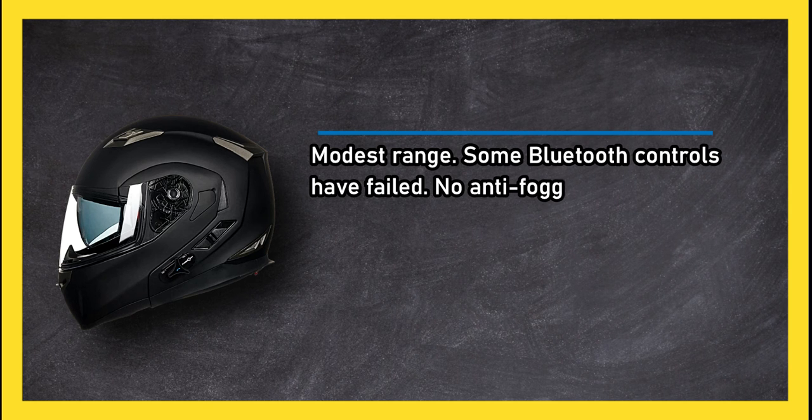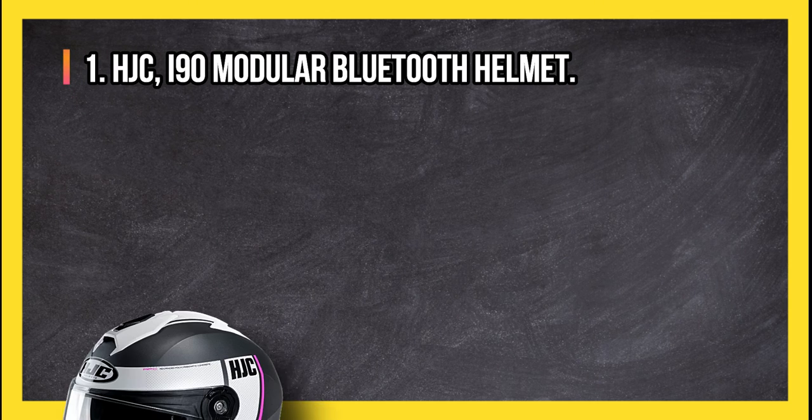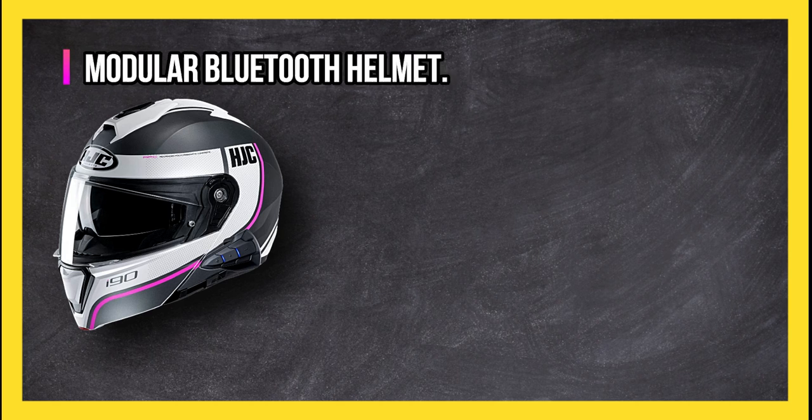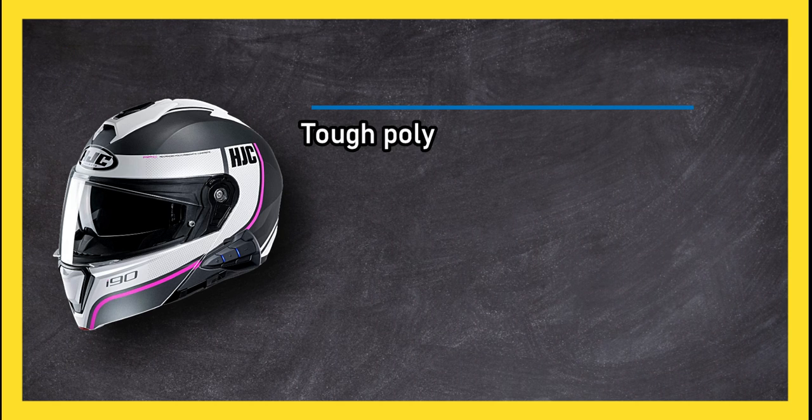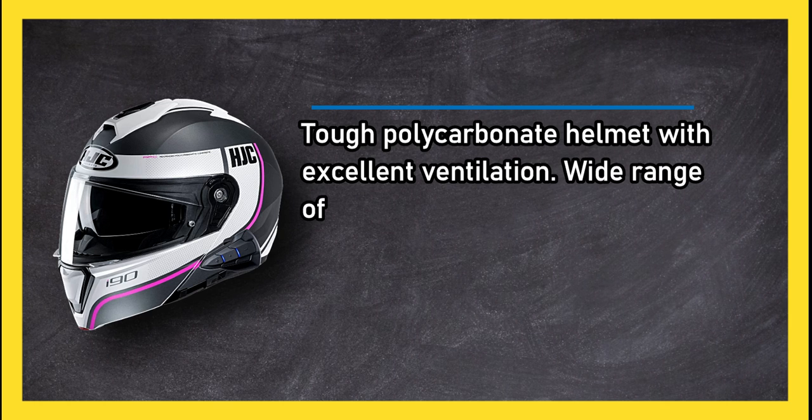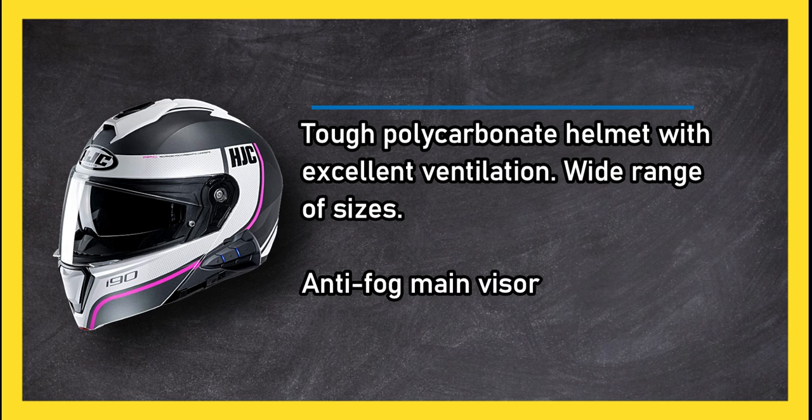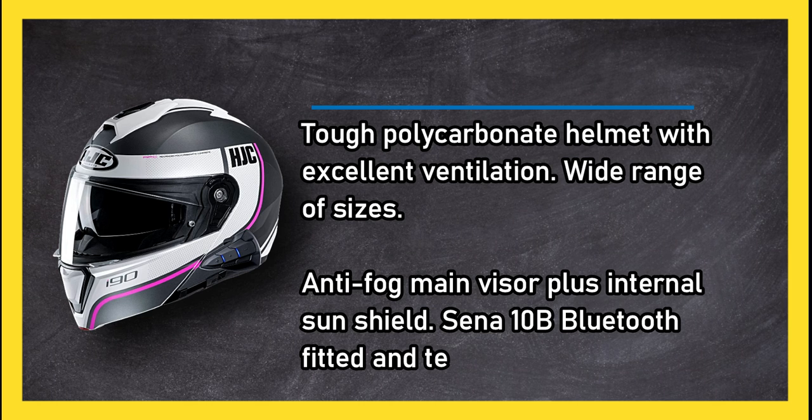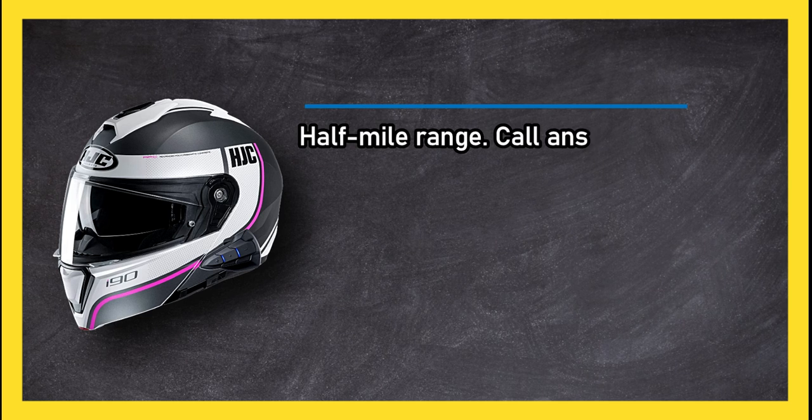At number one, HJC I90 modular Bluetooth helmet. Tough polycarbonate helmet with excellent ventilation, wide range of sizes, anti-fog main visor plus internal sun shield. Sena NB Bluetooth fitted and tested, half mile range, call answering and turn-by-turn GPS functions.